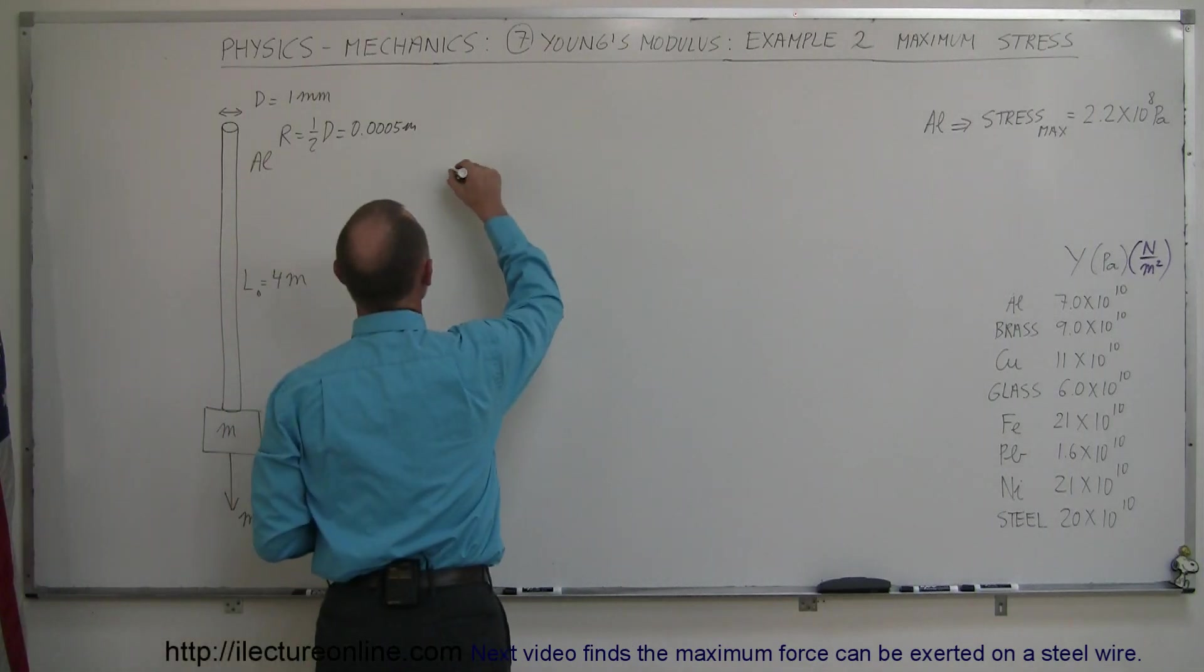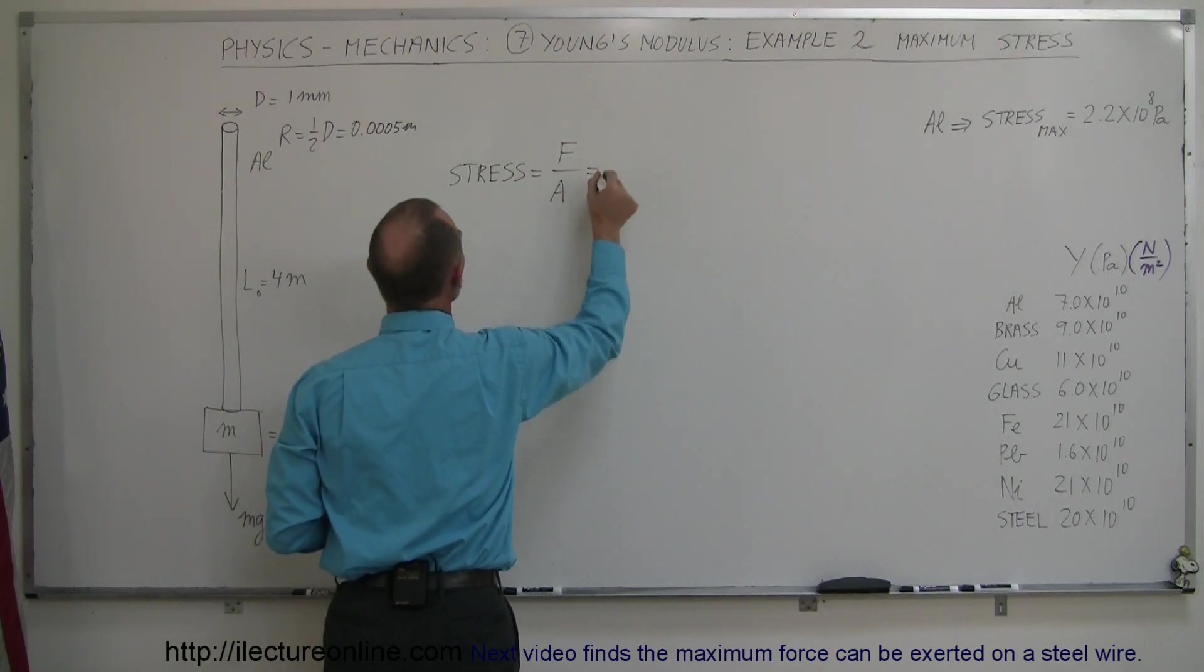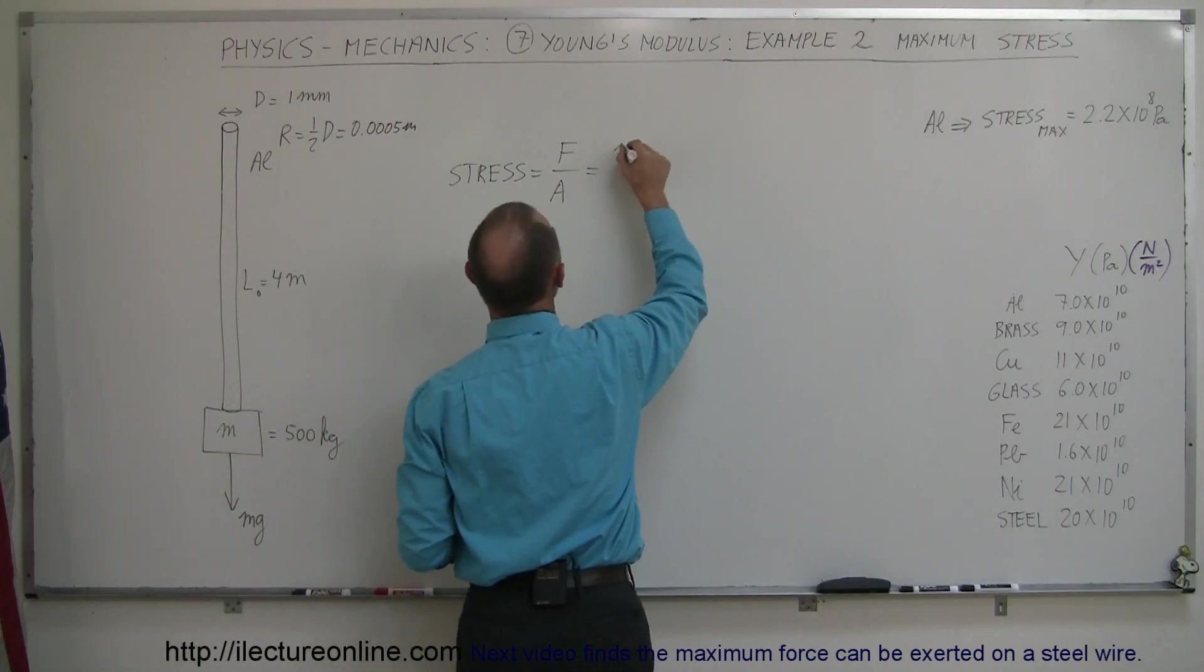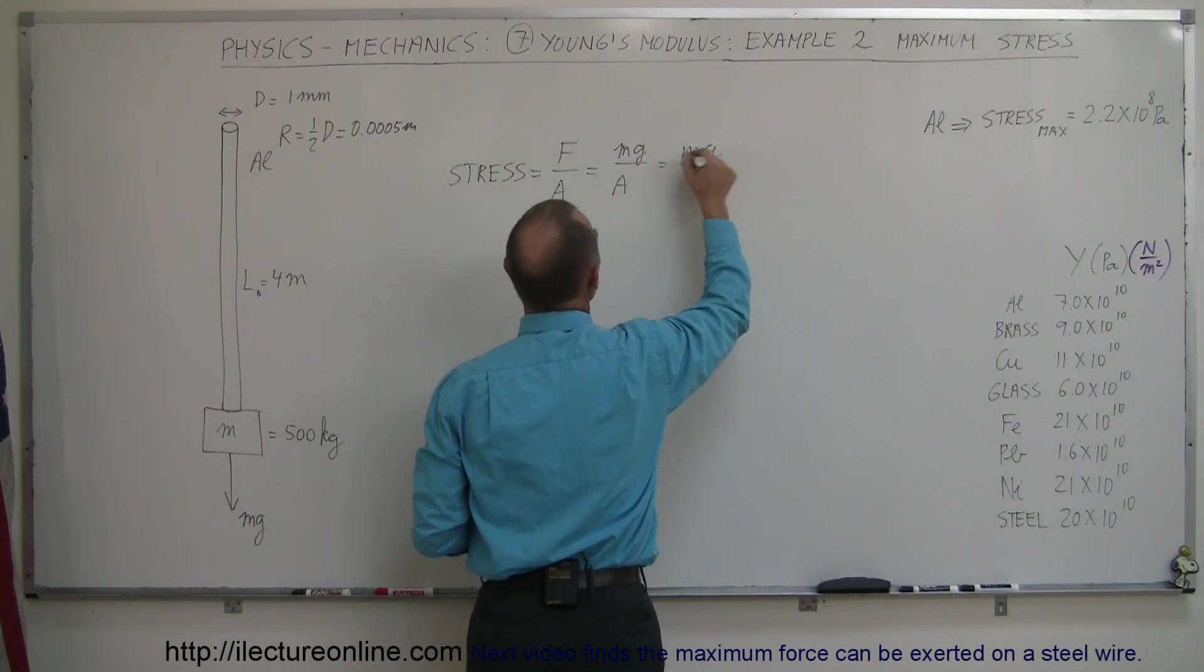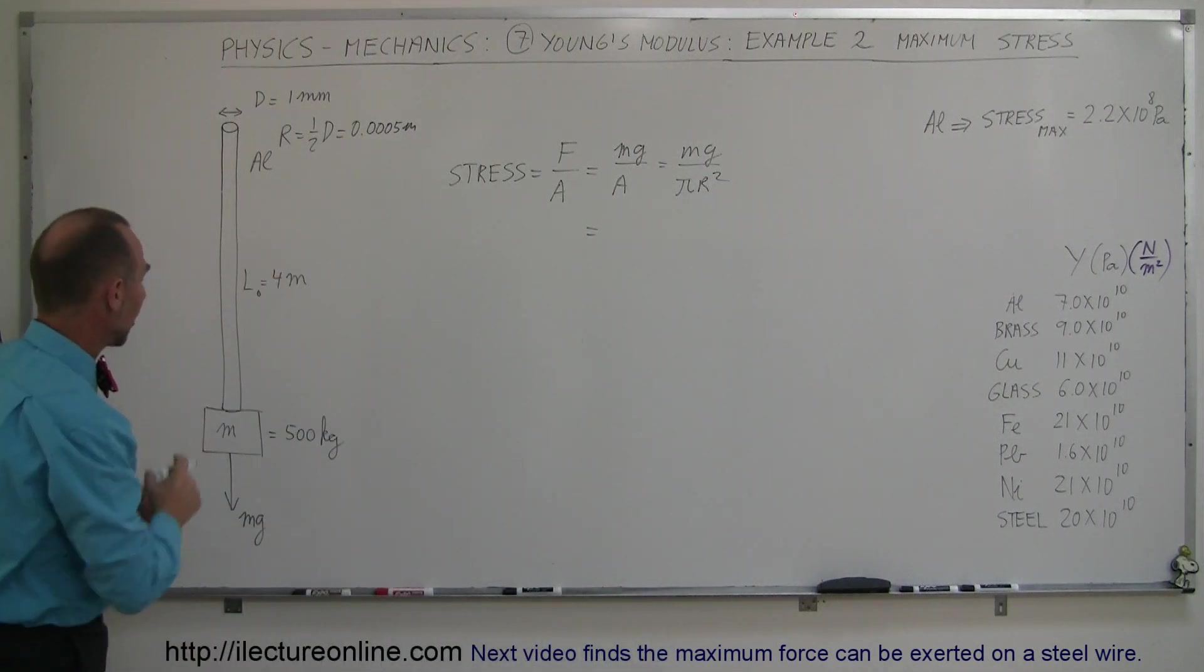So let's calculate the stress in this situation. So the stress is equal to the force divided by the cross-sectional area. So in this case, the force was the weight of this. That would be mg divided by the cross-sectional area. And of course, cross-sectional area would be equal to pi r squared. So mg divided by pi r squared will give us the stress caused by this mass.